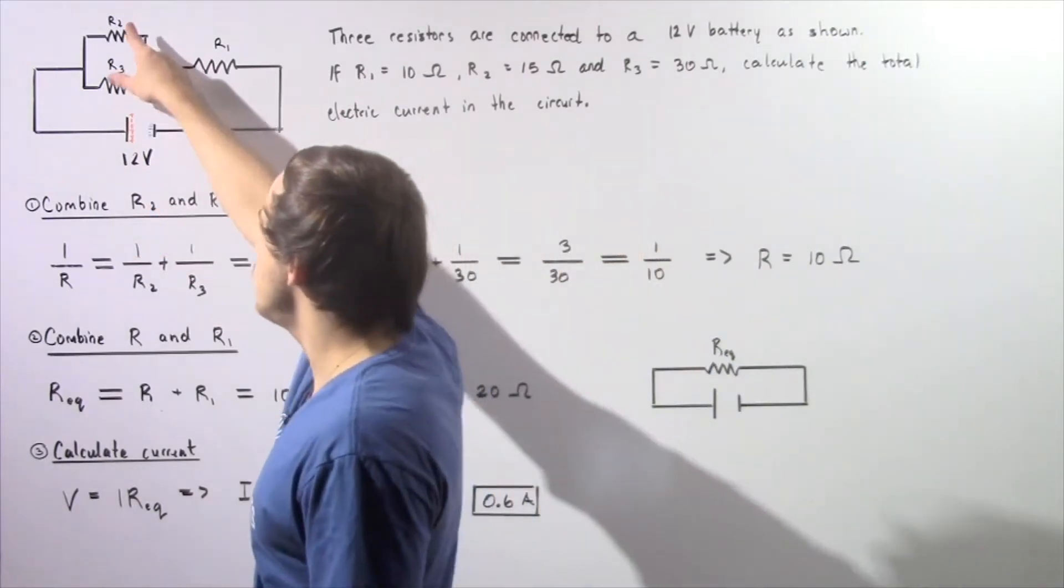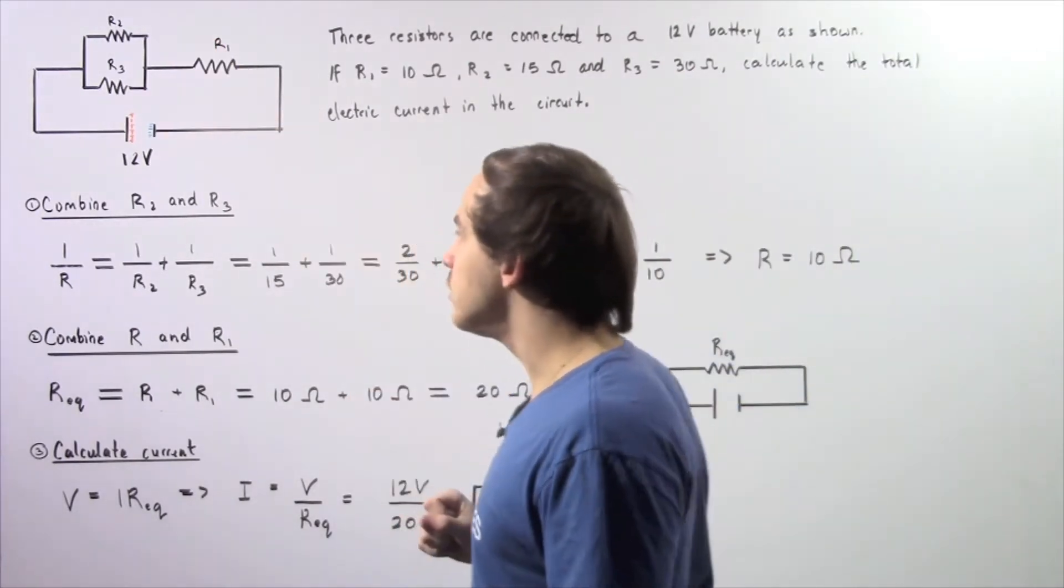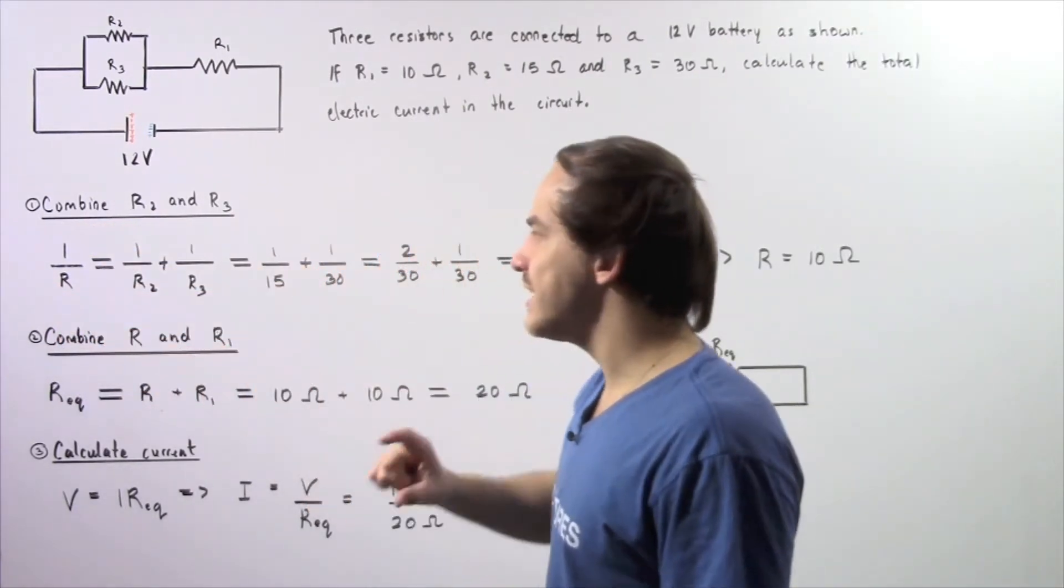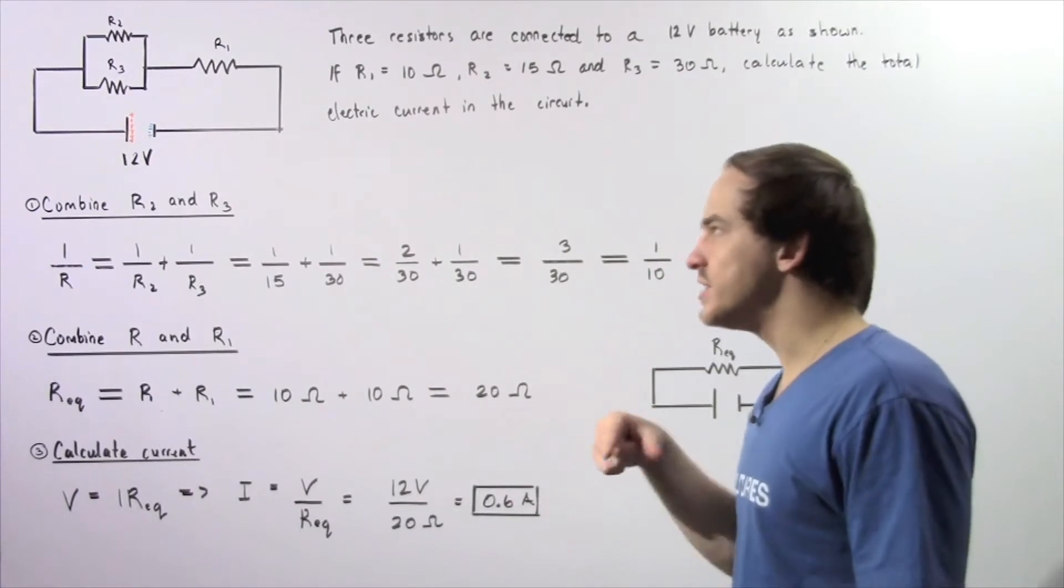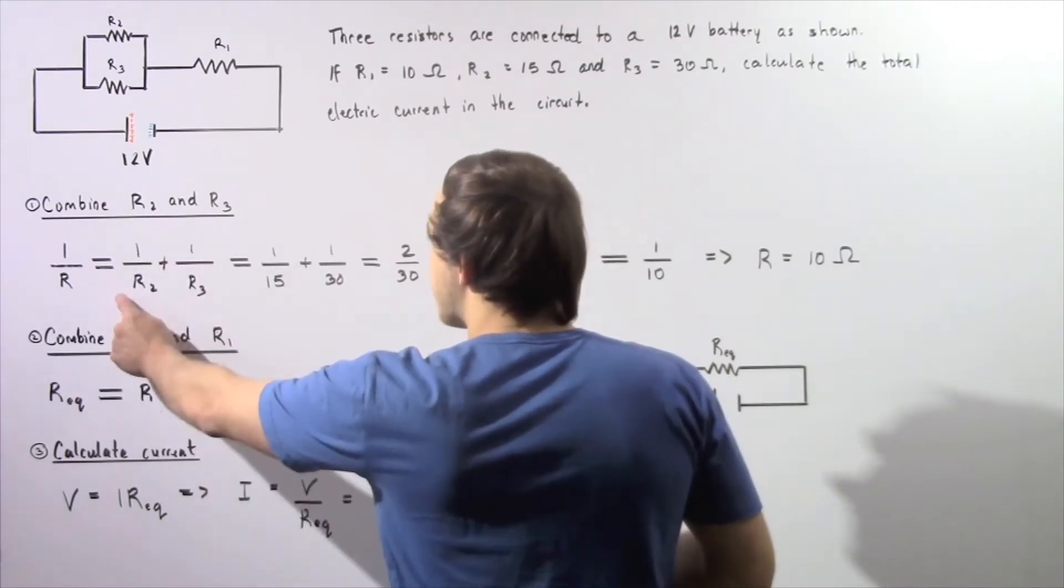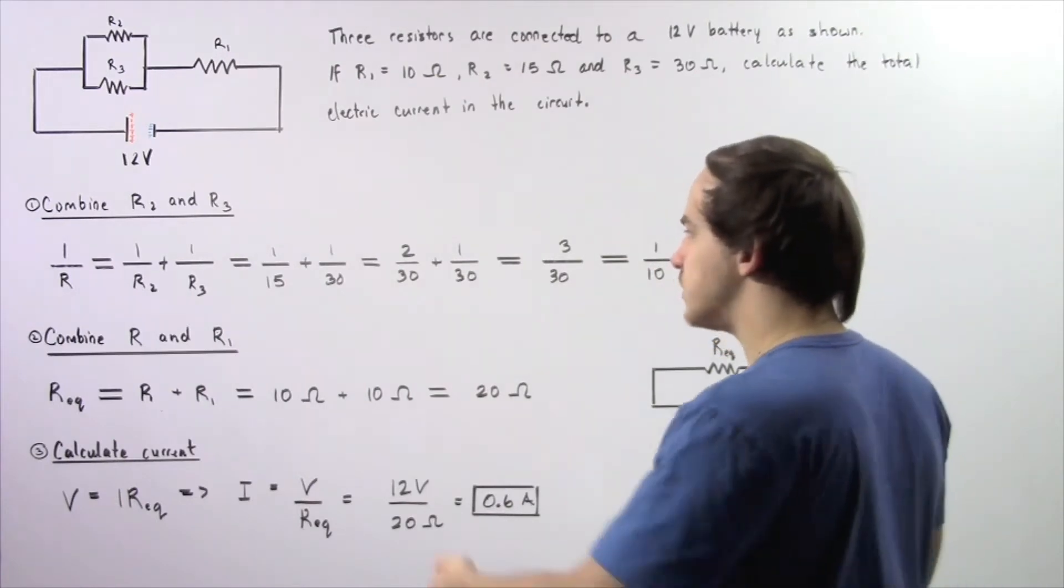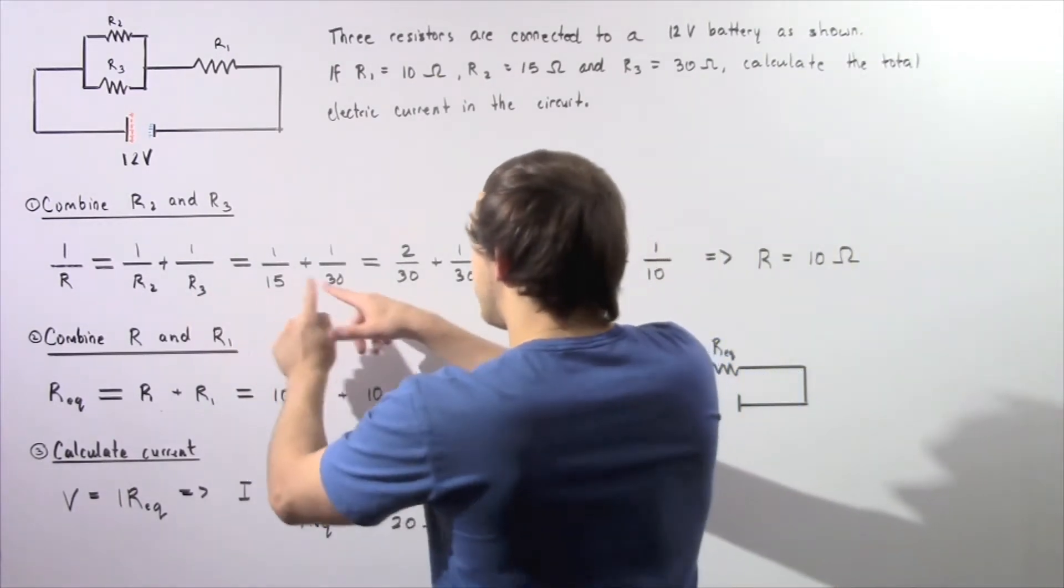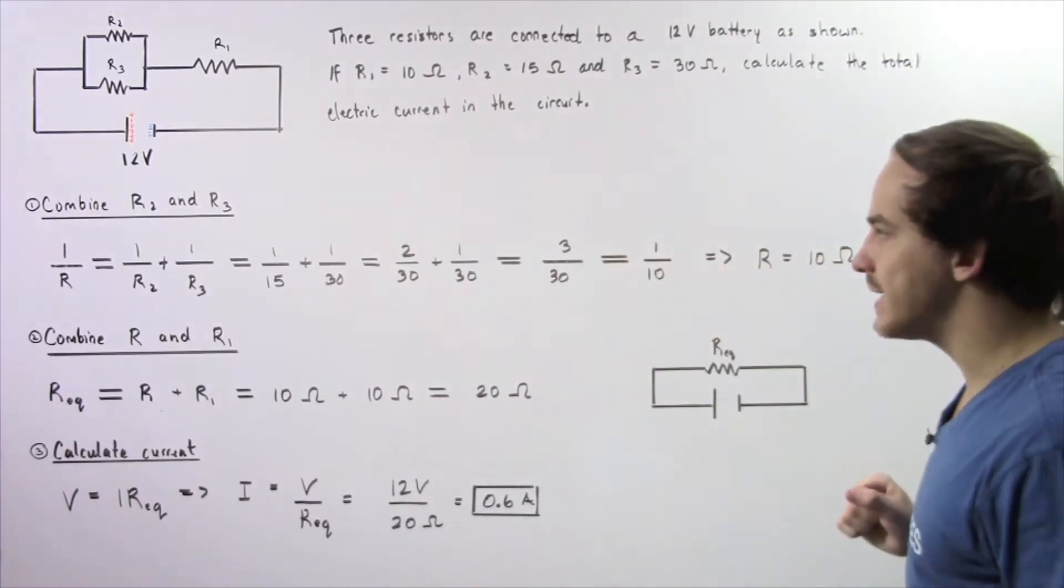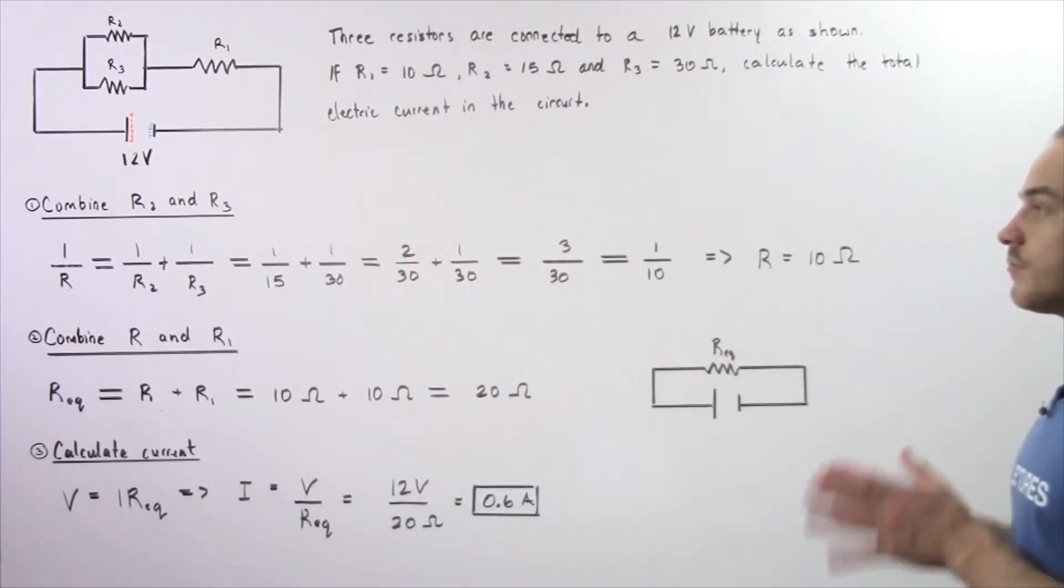So we want to combine R2 and R3. Now, to combine these two, because they're in parallel, we have to use this equation. One divided by R, where R is the equivalent resistance of that single resistor that will replace R2 and R3. This is equal to 1 divided by R2 plus 1 divided by R3. Now R2 is 15, R3 is 30. We combine these, and we get 3 divided by 30, and that's equal to 1 divided by 10. So we see our R is equal to 10 ohms.